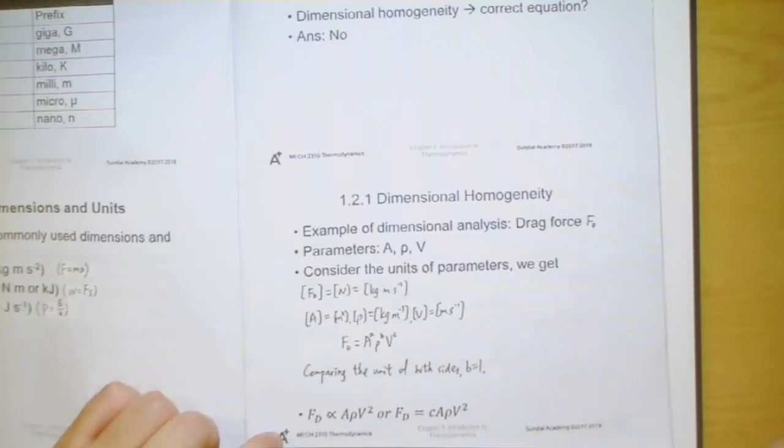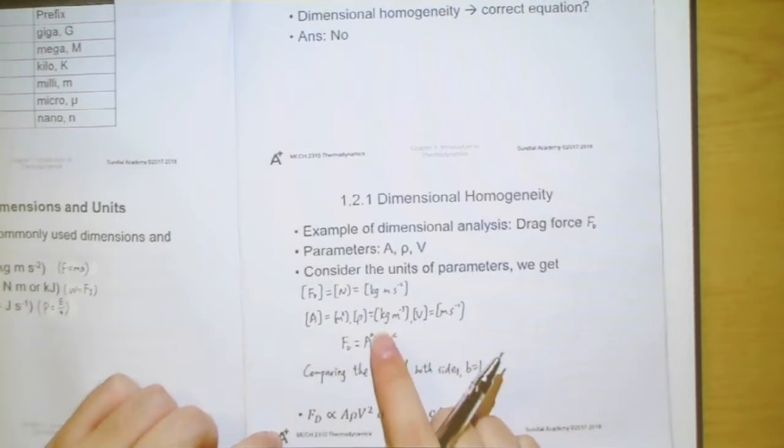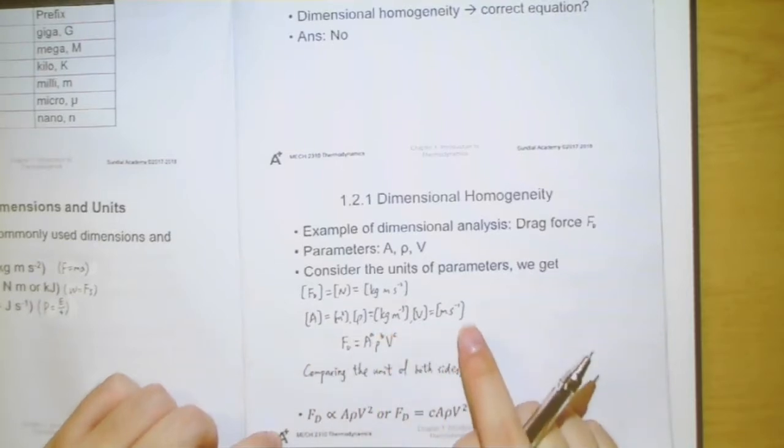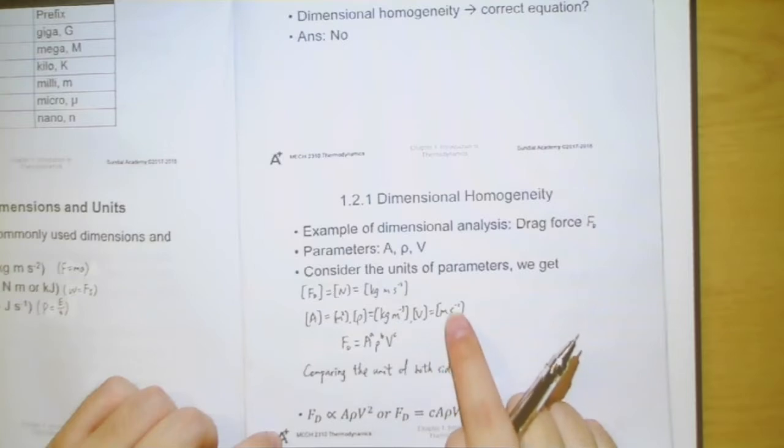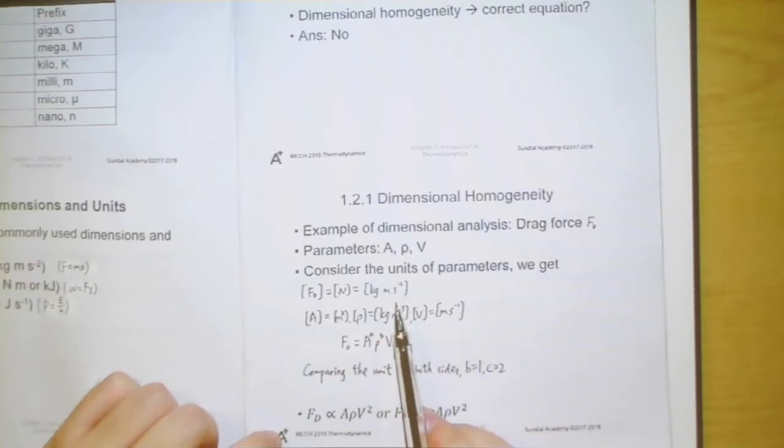How about other parameters? We know that second appears here. For A and rho, there is no any second involved in this unit. And only V have second. And we know that it is m s^-1. So, c should be two, so that the dimension would be s to the power negative two, which matches the s^-2 in the drag force.